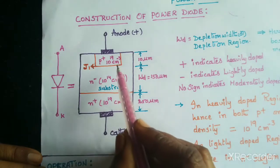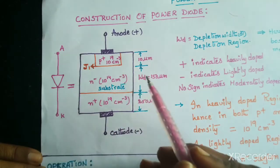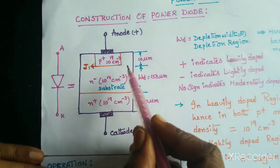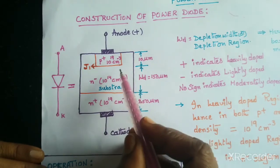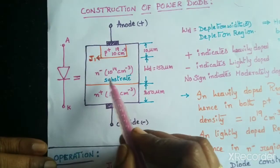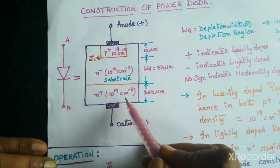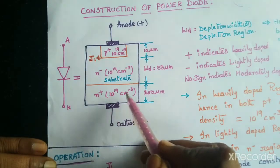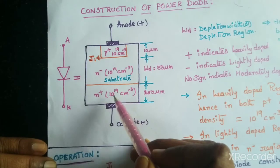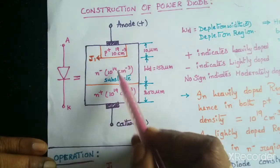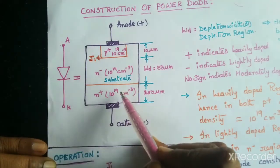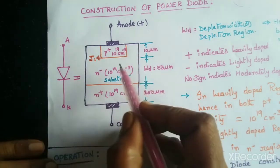Here in construction, in a normal diode we are having only 2 layers, but in this power diode we are having 3 layers. Those are: P plus layer, N minus layer, and N plus layer. These 3 are the layers in this power diode.